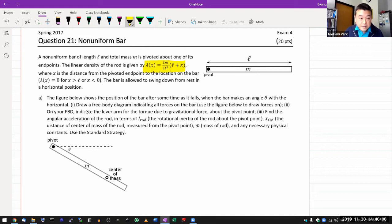So understand this setup and I guess a good part of understanding this setup would be making sure that you understand what the symbol x represents. Here it says x is the distance from the pivoted end point.